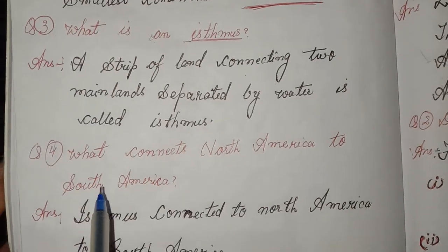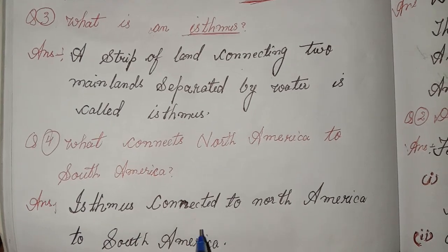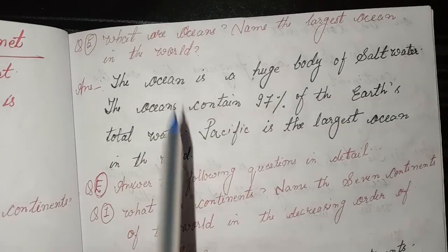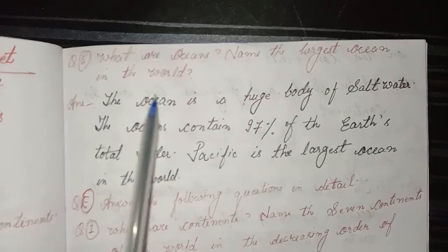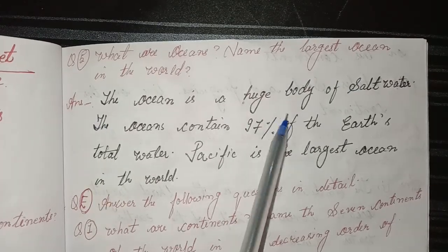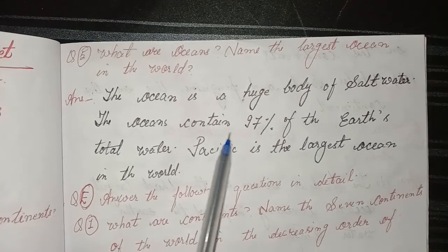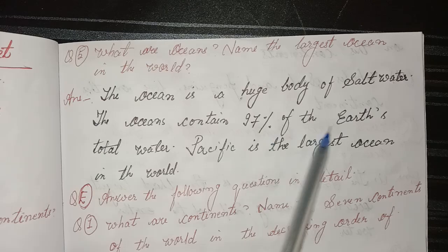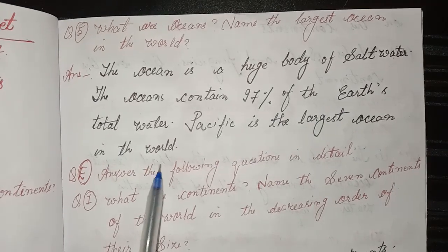What connects North America to South America? An isthmus connects North America to South America. What are oceans? Name the largest ocean in the world. An ocean is a huge body of salt water. The oceans contain 97% of the Earth's total water. The Pacific is the largest ocean in the world.